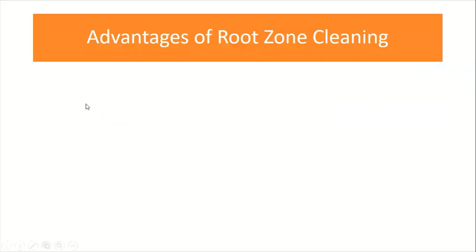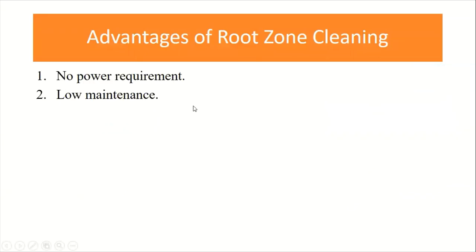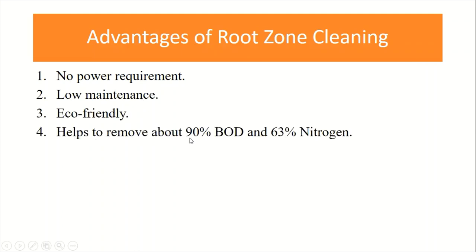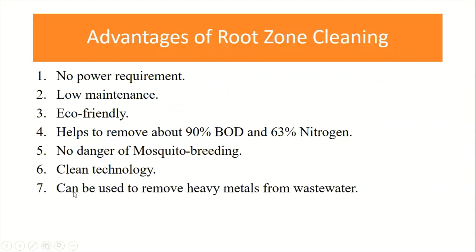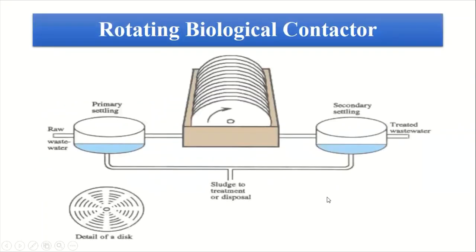The advantages of root zone cleaning: no power requirement, low maintenance, eco-friendly, helps remove about 90 percent of BOD and 63 percent of nitrogen, no danger of mosquito breeding, clean technology, and can be used to remove heavy metals from wastewater. The next method is the Rotating Biological Contactor.